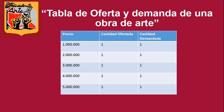Lo que se ofrece es un solo cuadro, una sola obra de arte; por eso en la oferta hay uno solo. Y la demanda, cada vez que ofrecen, es una sola persona. Fíjense lo que pasa ante distintos cambios en el precio: la cantidad demandada no cambia. La elasticidad mide cuánto varía la demanda ante cambios en el precio, y acá no varía. Entonces, este tipo de bien tiene una elasticidad precio de la demanda perfectamente inelástica.